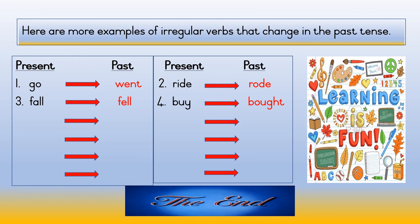Number four — present tense: buy; past tense: bought. Number five — present tense: have; past tense: had. Number six — present tense: run; past tense: ran.